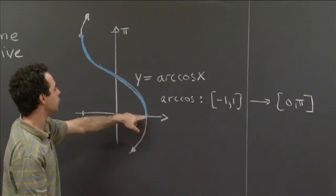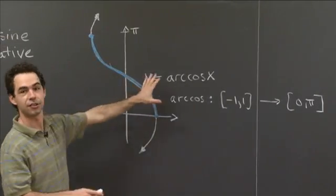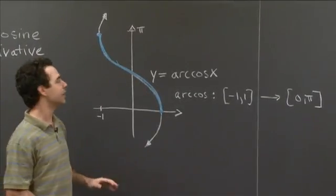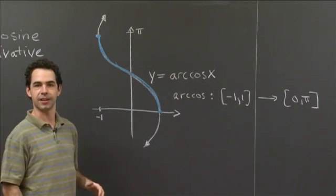So if you graph the function, so now this is a proper function. It's single valued. It passes the vertical line test. And so that's the graph of y equals arc cosine of x.